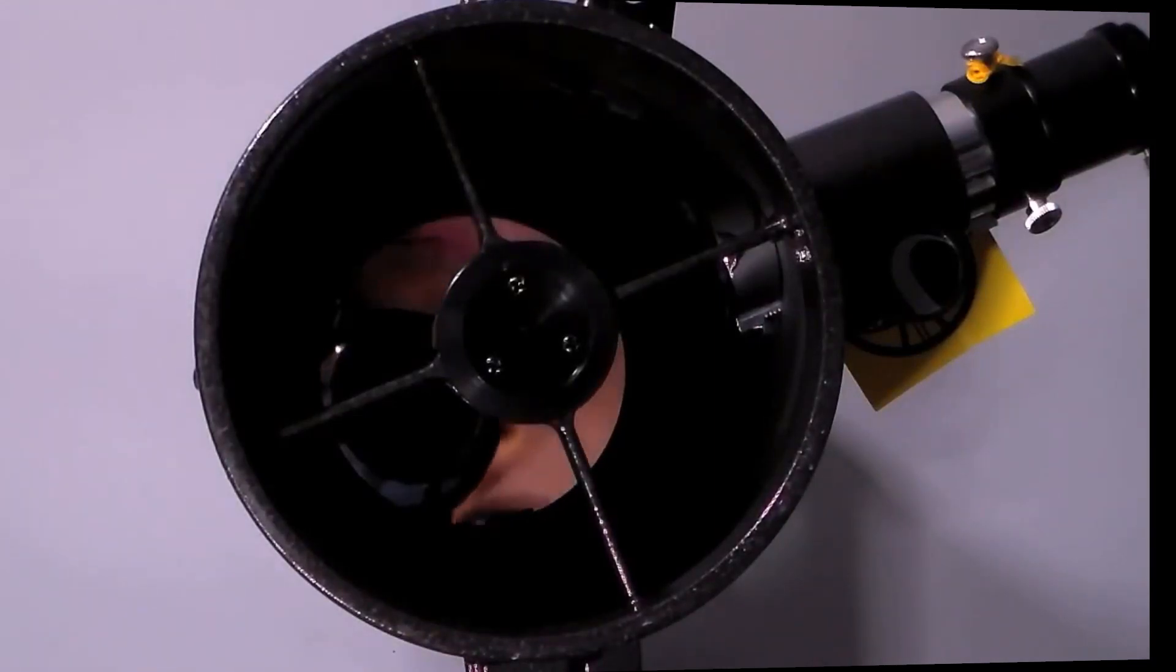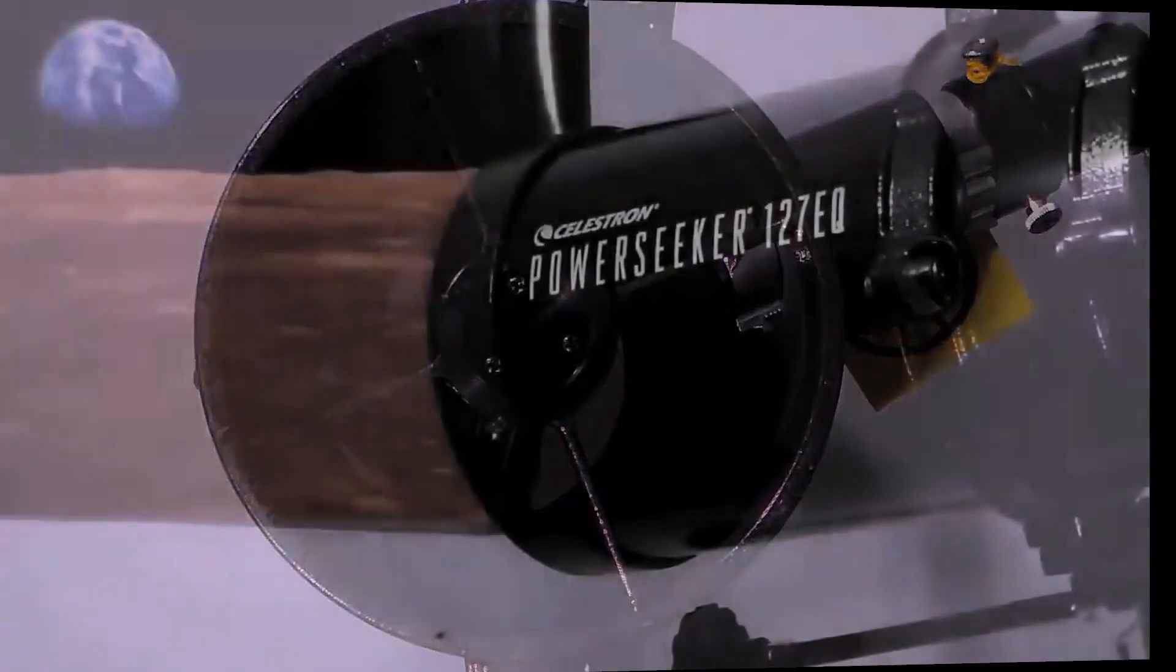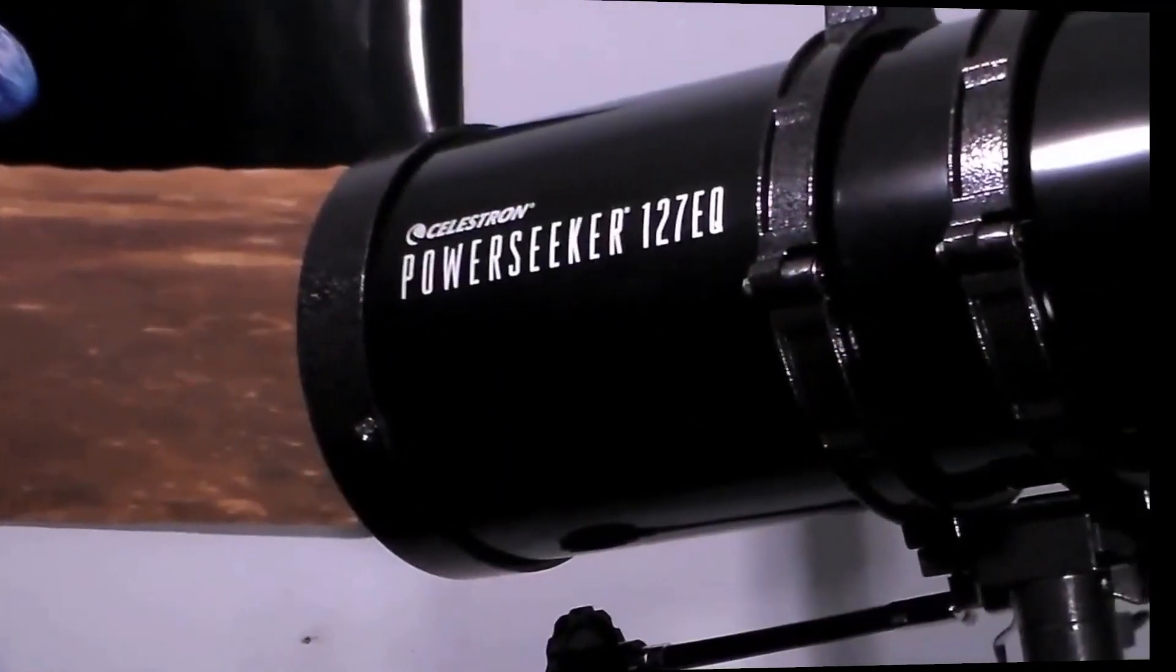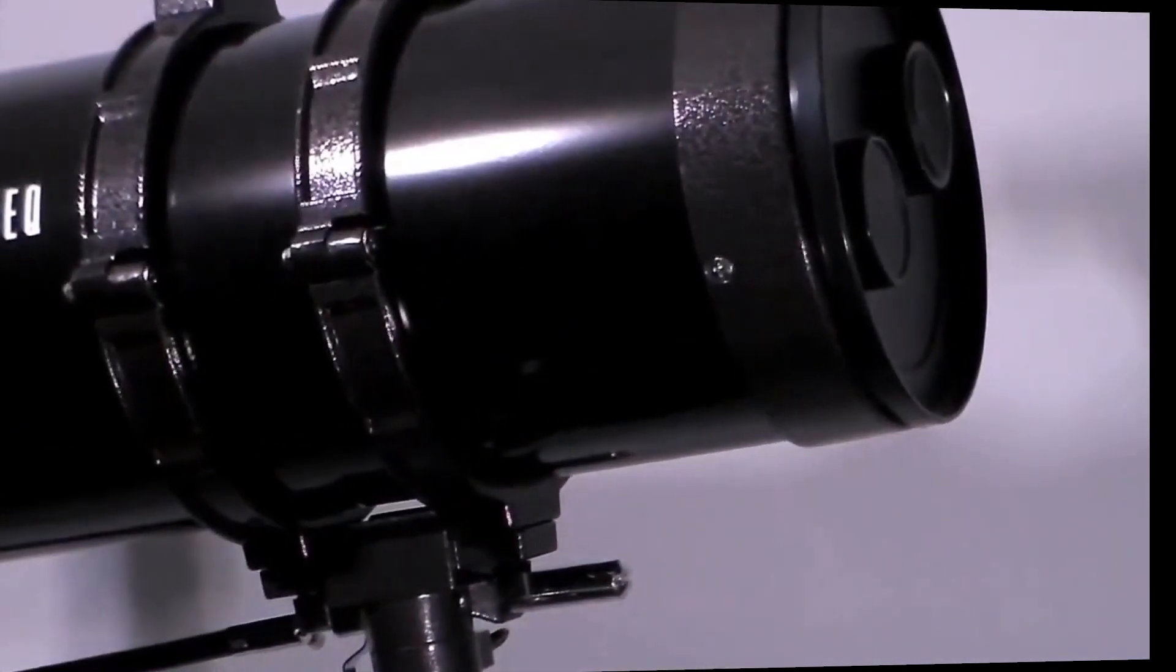This telescope can also be considered as a Schmidt-Cassegrain catadioptric telescope. This type of telescope combines a Cassegrain reflector's optical path with a Schmidt corrector plate to make a compact astronomical instrument that uses a simple spherical surface.